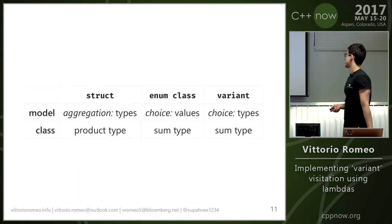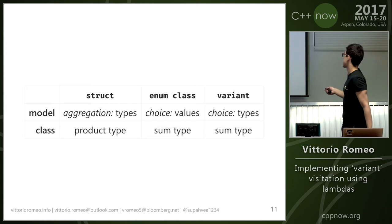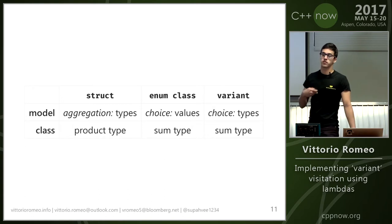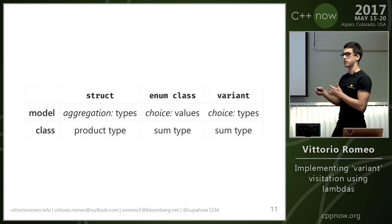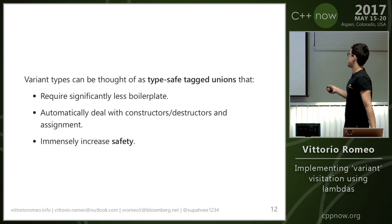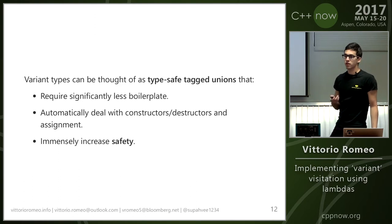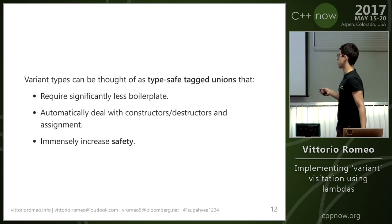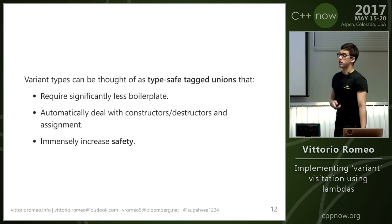This table adds type theory and functional programming terminology. Struct is a product type, and enum class and variants are sum types — we say sum because the possible number of states is obtained by summing the states of every type inside either the enum class or the variant. If you're familiar with typesafe tagged unions, they are very similar to variants, but variants have objective advantages: less boilerplate, they automatically deal with constructors, destructors, and assignment, and they provide immensely increased safety.